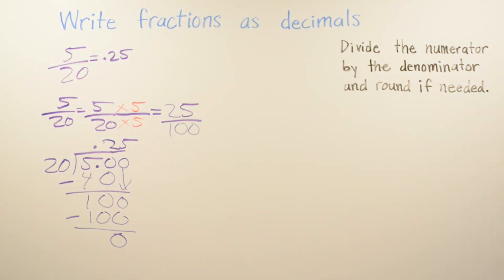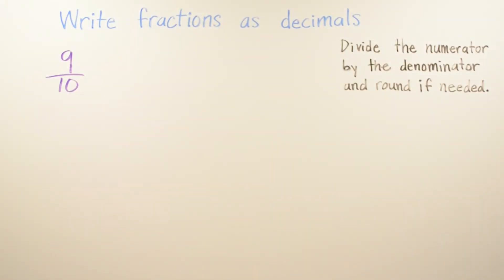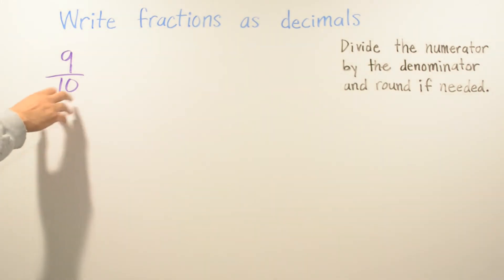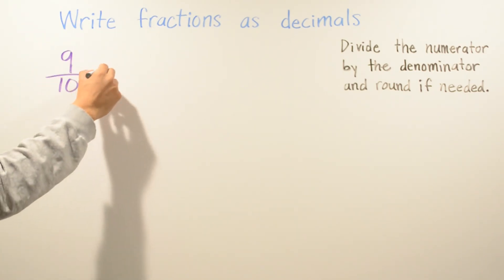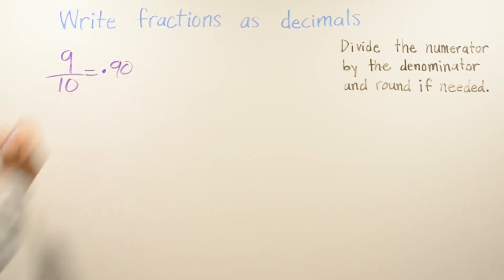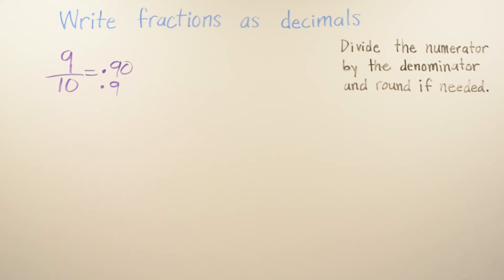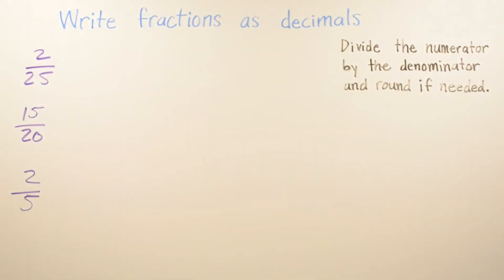For this problem we have nine over ten. Since you already have a base-ten fraction, you don't need to do anything extra. Right away you know the answer is 0.9. There's no need to divide the numerator by the denominator because it's already in base ten.